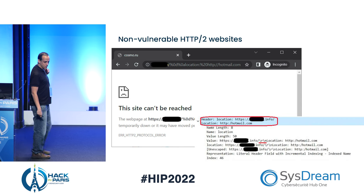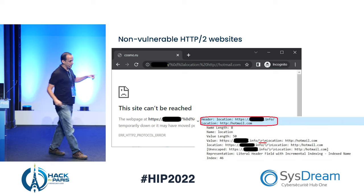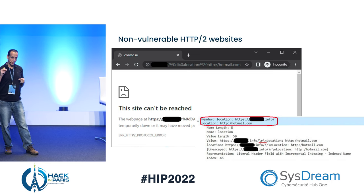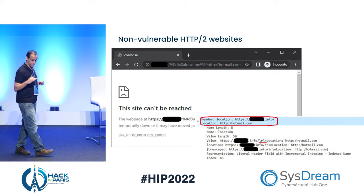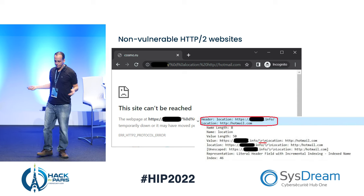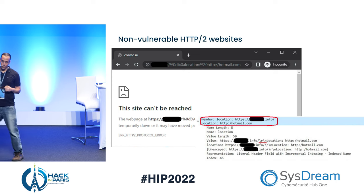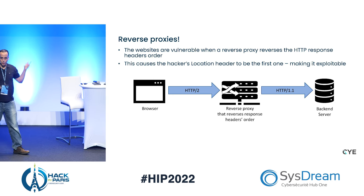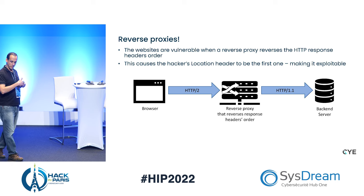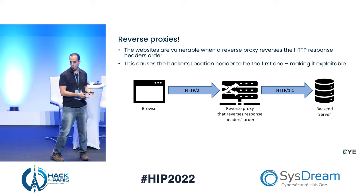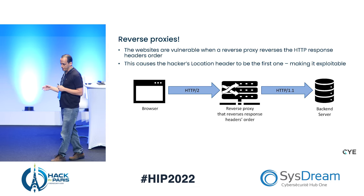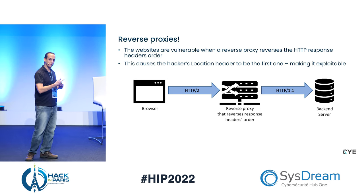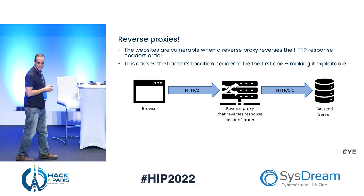We didn't know what configurations enable the injected header to be first. We saw some vulnerable examples and some that were not vulnerable — where the location header contained the two values concatenated, not treating the CRLF as a new line for a new header. Eventually we found the vulnerable configuration: whenever you have a reverse proxy that swaps the order of the response headers. Your browser connects with HTTP 2 to a reverse proxy, the reverse proxy talks to the backend with HTTP 1.1, and reverses the order of the response headers.